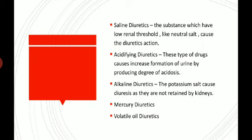Volatile oil diuretics: the volatile oils or oleo-resins also have an irritant action on the tubules. Due to inhibited reabsorption, they cause diuresis. Such substances also exert an antiseptic effect in the urinary tract. For example, betel leaves.